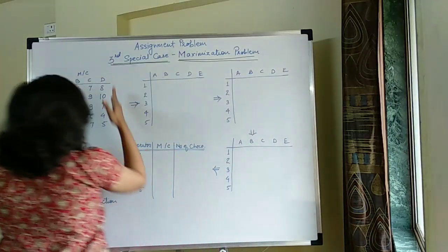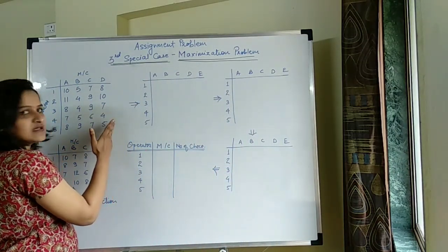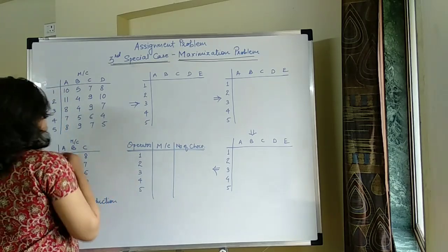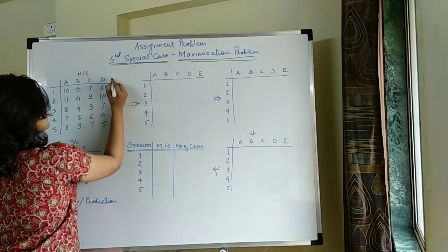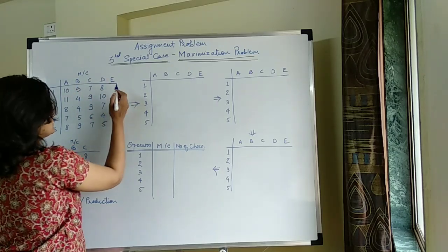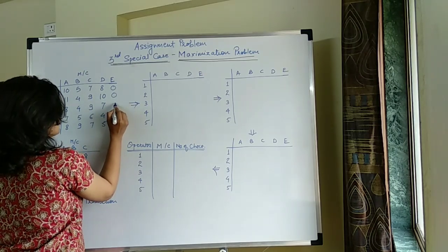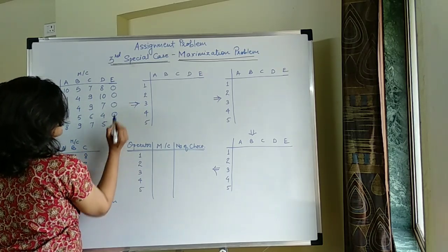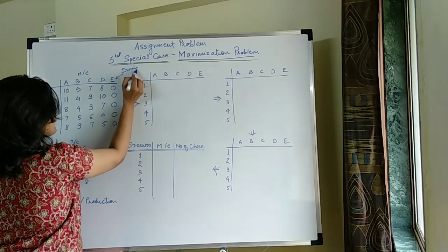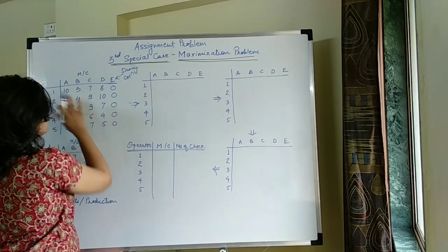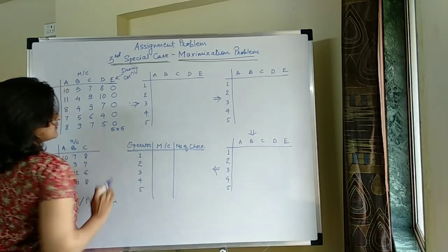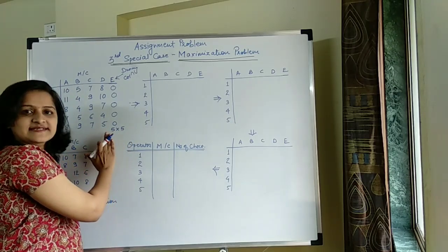How to balance it? By adding 1 dummy column to this matrix so that it will become a 5 by 5 matrix. So let's add one column — that would be E. All the numbers in that column would be 0, as we have seen already. This is your dummy column. Now this matrix becomes a 5 by 5 matrix, so the matrix is balanced.